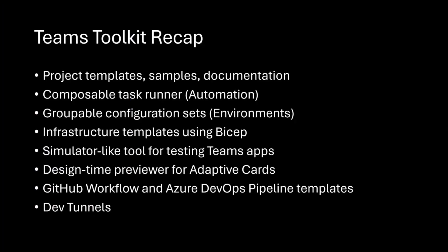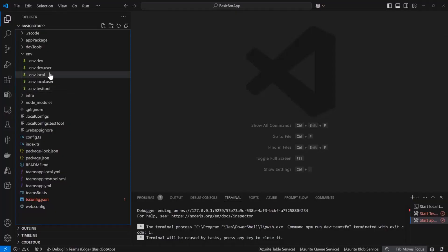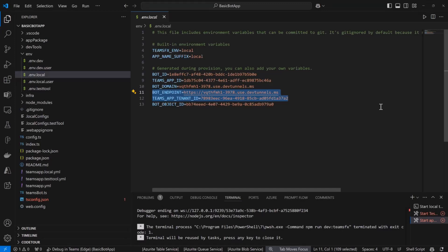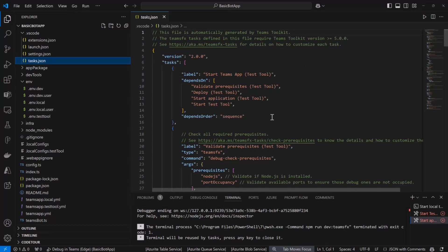So let me make sure I didn't miss any bullet points. We talked about the templates, the task runner which is the YAML files, and the environments which are just environment files but you can group them into sets. The infrastructure files I didn't get into — we'll go into those in a future series on how to host this thing in Azure. I just showed you how to run the test tool and how to run inside of Teams; we didn't actually host anything in Azure, everything was running locally. And then the adaptive card previewer and the GitHub workflow and Azure DevOps pipeline templates will be another future series on CI/CD. What's cool about Toolkit is a lot of this stuff you don't need to know right away, but once you want to customize something you can start peeling back the layers.